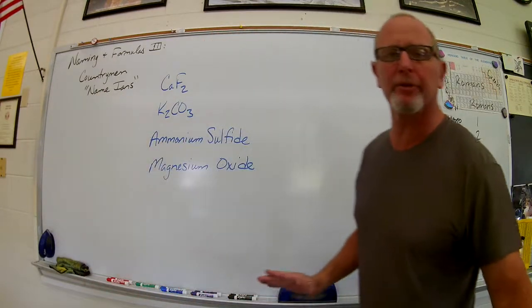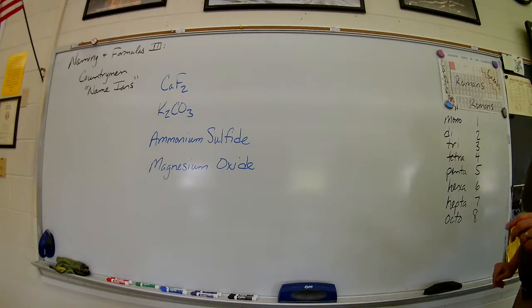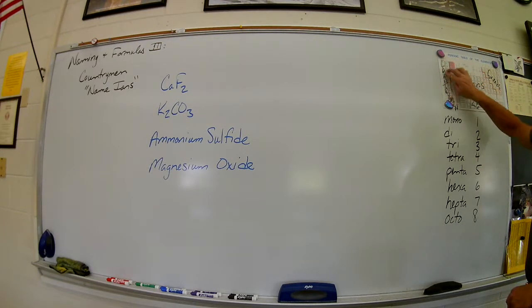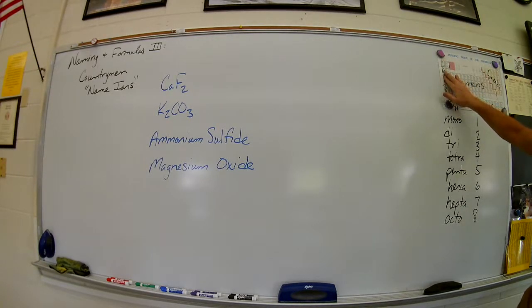Name the ions. Countryman are simple. We're going to know if we have to use countryman naming if our first element is in the first two columns of the periodic table. Only the light metals are named as countryman.